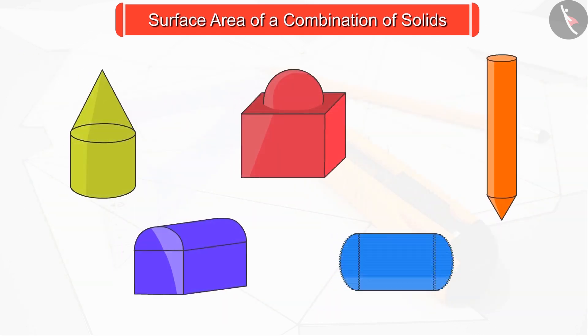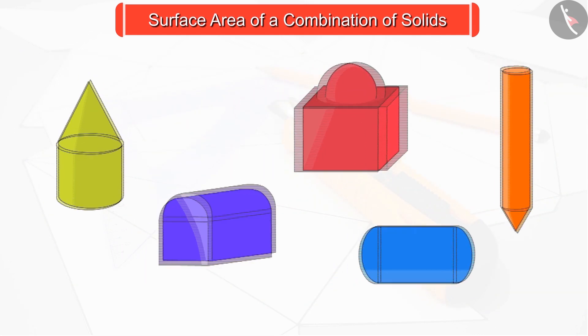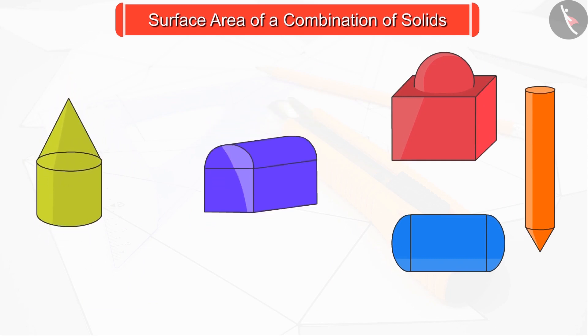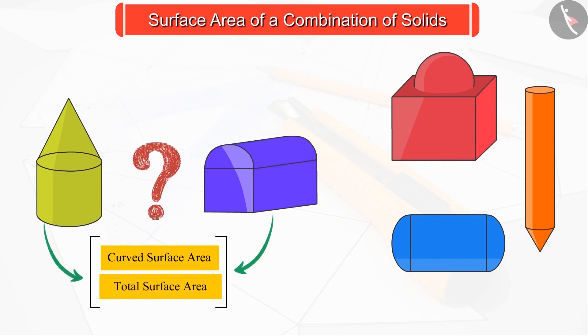If you are asked of the figures formed by the combination of these solid figures, can you find the curved surface area and the total surface area? Let's discuss about it.